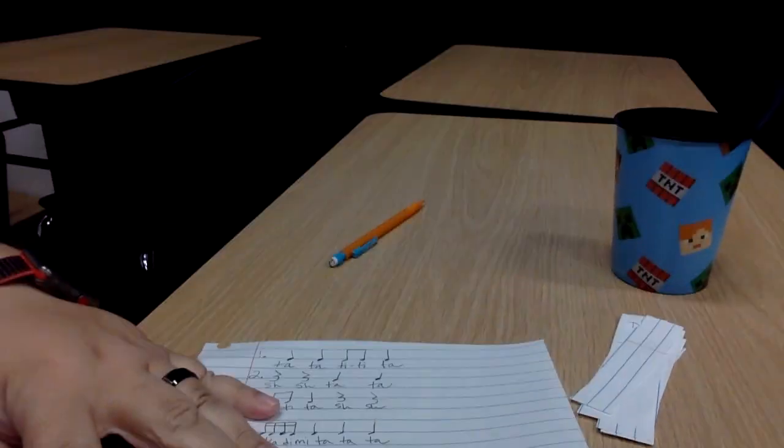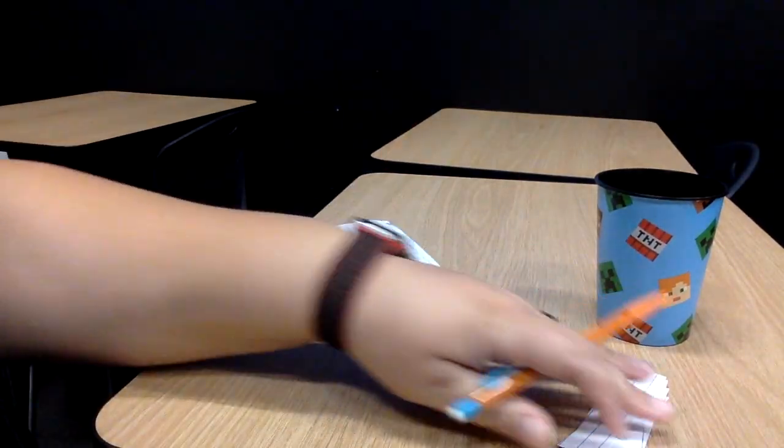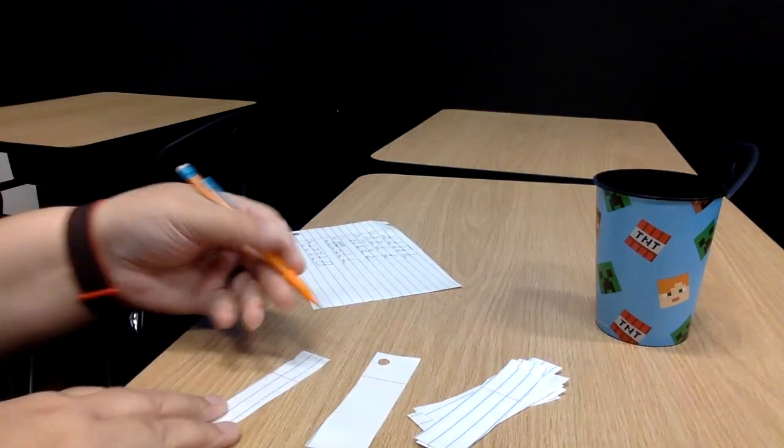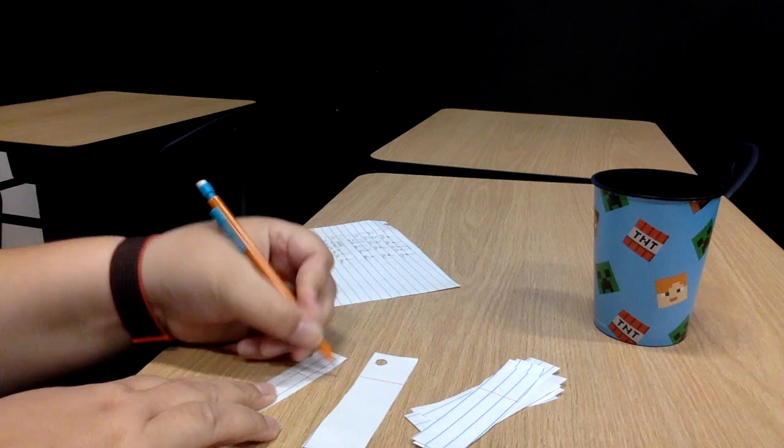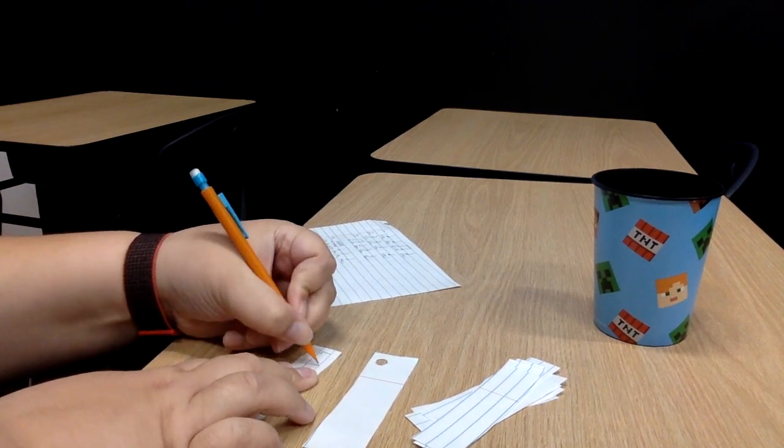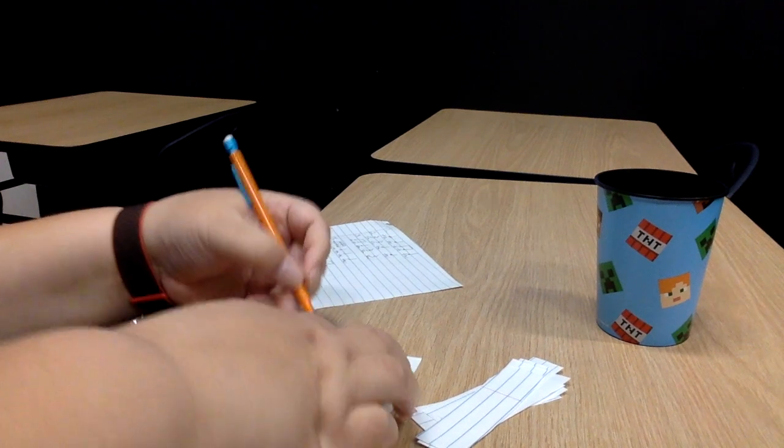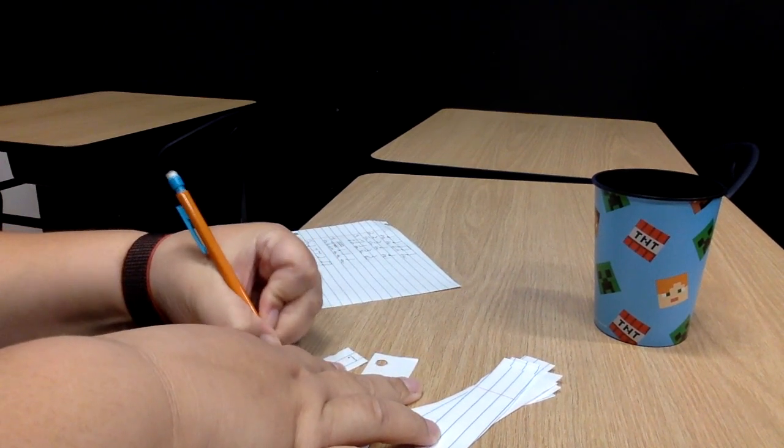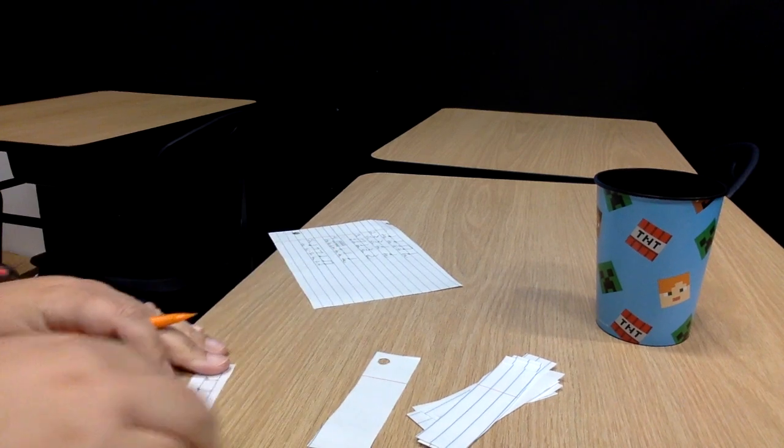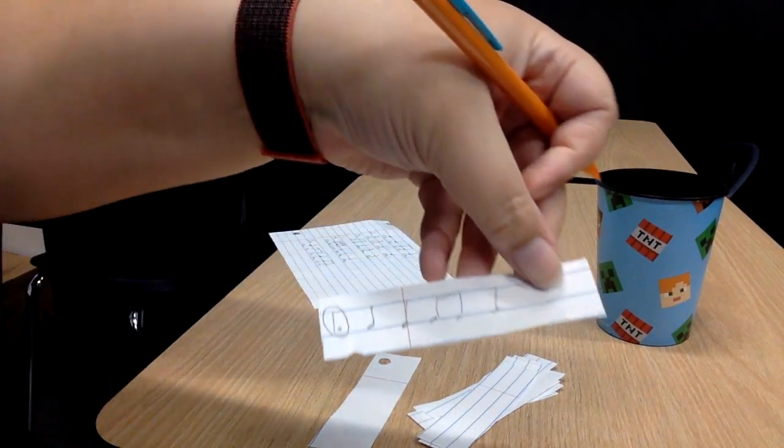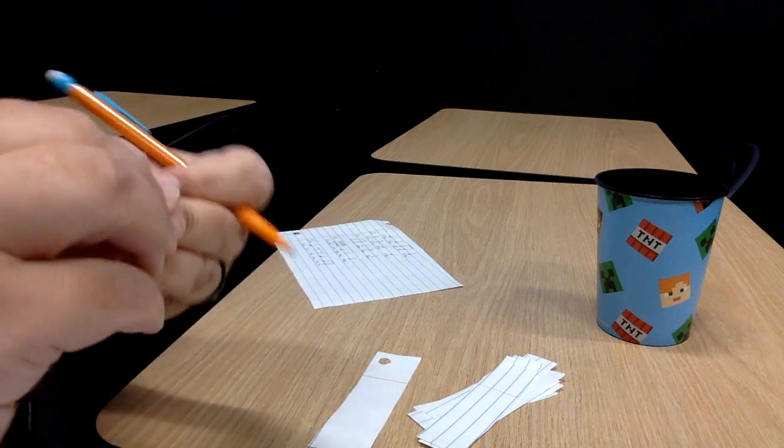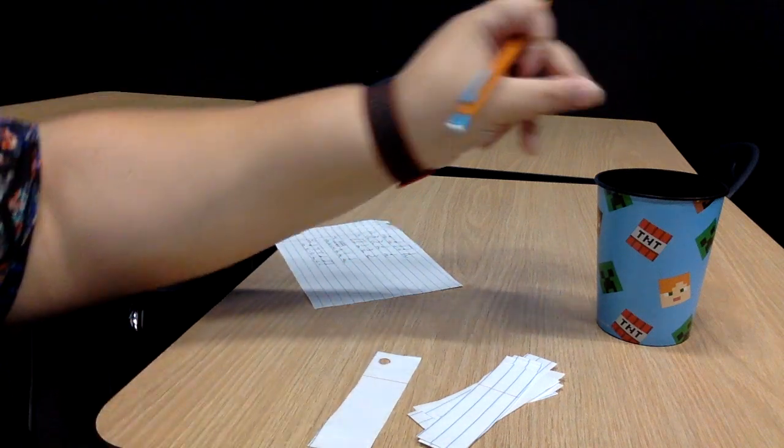Now we're going to take those little sheets of paper that we had, and we're going to actually copy those rhythms onto the papers. I'm going to write number one, and I'm only going to write the notes on this one. I don't have to write the words on this one. I have ta ta ti-ti ta. It should look like this. Actually, I'm going to circle the number one. That way I know it doesn't go with the music, it just is part of my game. Then I get to crumble it like that, and I'm going to toss it into the cup.